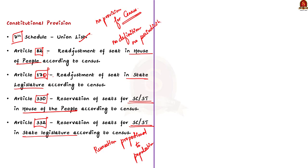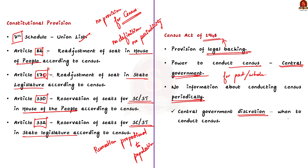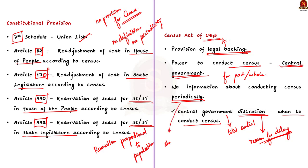Although the Constitution mentions the use of census, it does not define census or specify how to conduct it or its periodicity. This is where the Census Act 1948 comes in, which provides legal backing for census in India. The Census Act 1948 empowers the central government to conduct the census for a part or whole of India. However, it does not mention anything about the periodicity of census — it just says the government can start the census process whenever it considers necessary. So, the union government has total control and discretion over census operations.